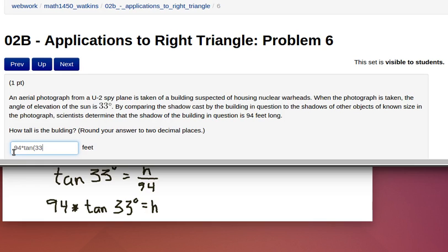Uh-oh, here's a problem. WebWork always thinks in radians instead of degrees. So I can change that degrees to radians by just saying 33 times pi divided by 180. Okay, there's the result that we're looking for. 94 times the tangent of 33 degrees or 33 times pi divided by 180 radians. That's going to be the height of H.